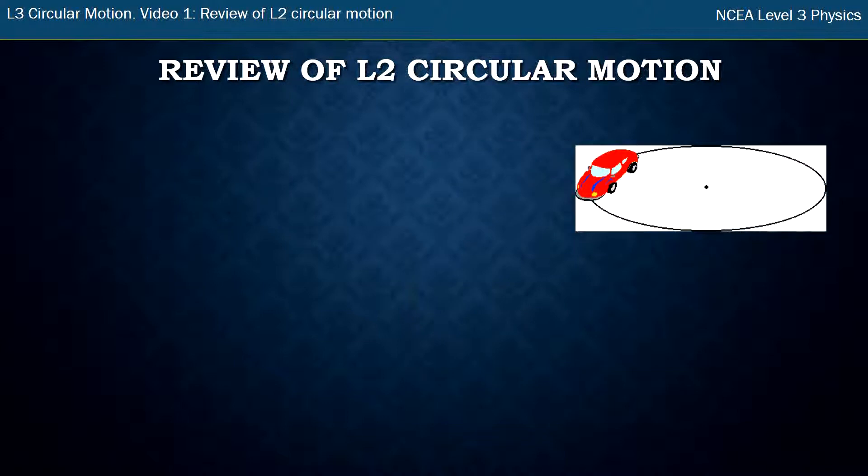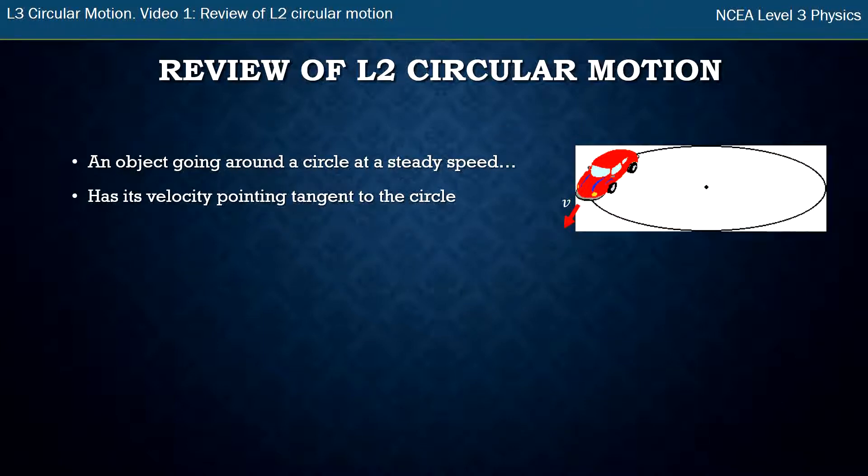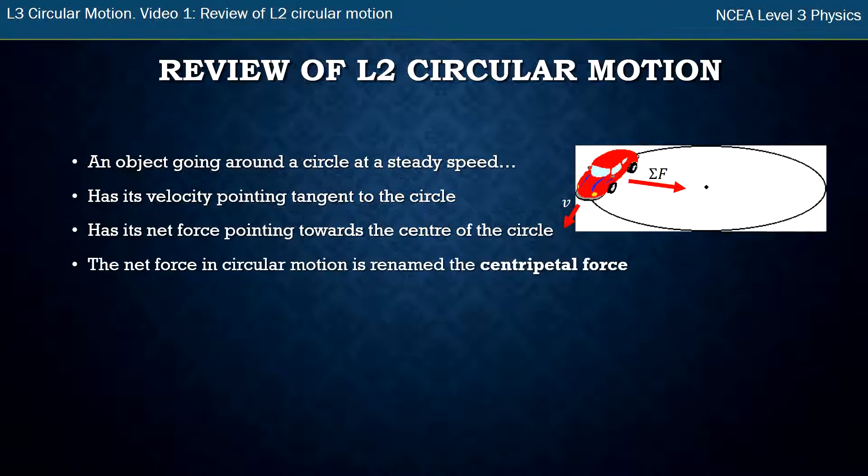Alright, so in Level 2 you learned an object going around a circle at a steady speed has the following properties. The velocity is always tangent to the circle, so you can see it pointing straight ahead there, but as the car moves around the circle it's going to be pointing in a different direction, always tangent to the circle, and it has a net force pointing towards the center of the circle. The net force points towards the center of the circle, and we rename this net force in circular motion the Centripetal Force.